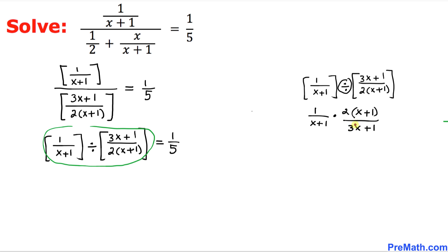So we simply ended up with 2 divided by 3x plus 1. So that means I am going to replace this left-hand side part by its simplified form, which is 2 over 3x plus 1. I am going to write down the left-hand side is going to become 2 over 3x plus 1 equals to 1 over 5.